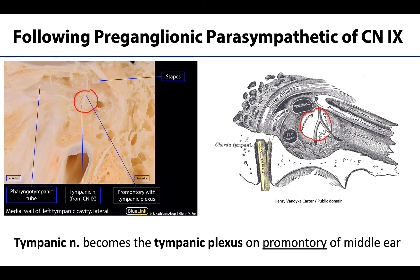It is important to note that the tympanic plexus is not composed solely of those preganglionic parasympathetic fibers from the tympanic nerve — there are also postganglionic sympathetic fibers that form part of this plexus as well, and these sympathetic fibers are postganglionic because they have already synapsed in the superior cervical ganglion.